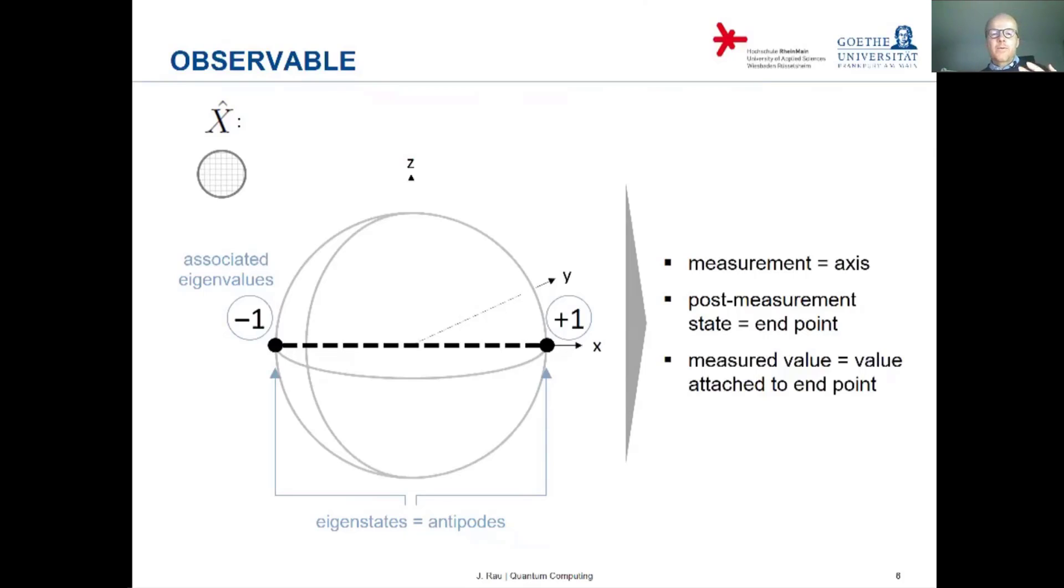So remember an observable for a qubit you can imagine that as an axis going through the center of the sphere and then the two endpoints correspond to the two eigenstates and then you can just attach the eigenvalues to the end point. Then let's move on to probabilities.